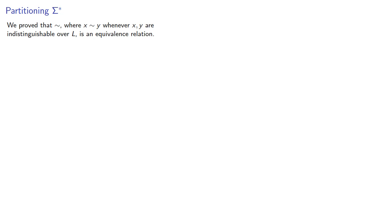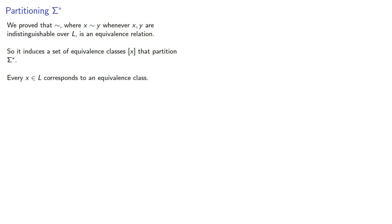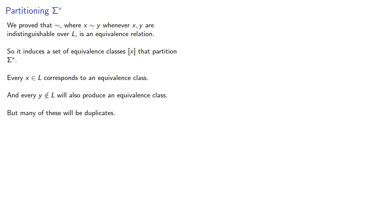We've proved that squiggle, where x squiggle y whenever x and y are distinguishable over L, is an equivalence relationship. So it introduces a set of equivalence classes that partition our set of strings. Now every string in our language corresponds to an equivalence class, and every string not in our language will also produce an equivalence class. But many of these will be duplicates, so let's see how we can reduce the number of equivalence classes to just the necessary ones.